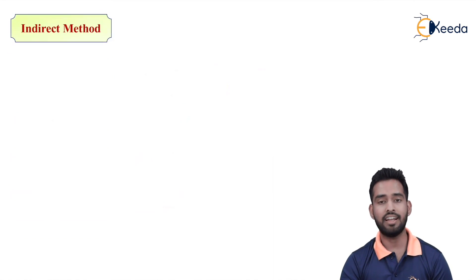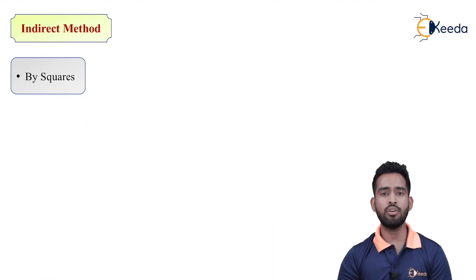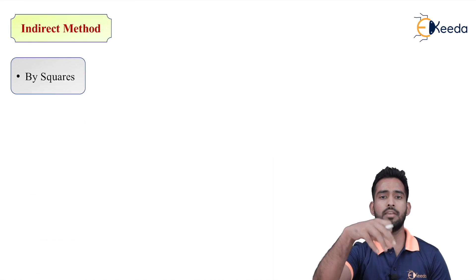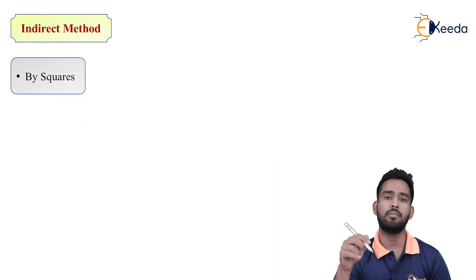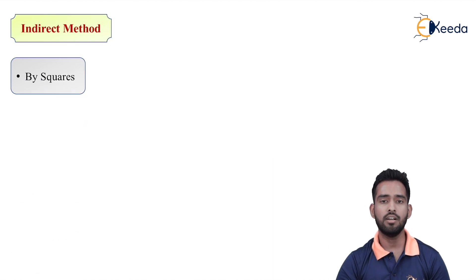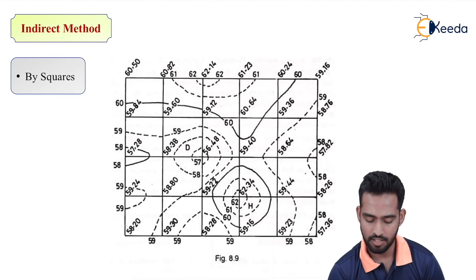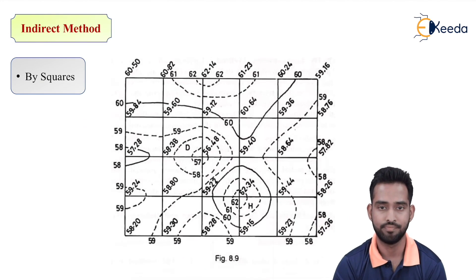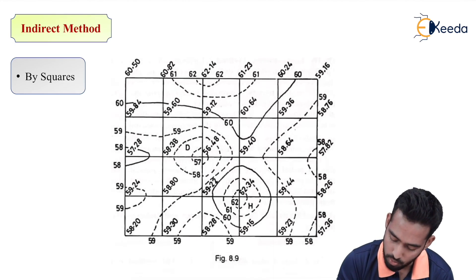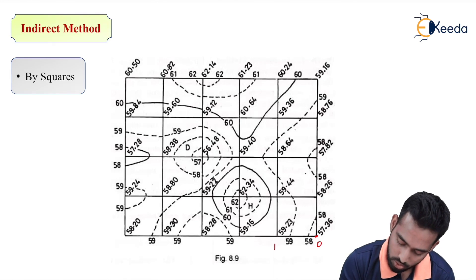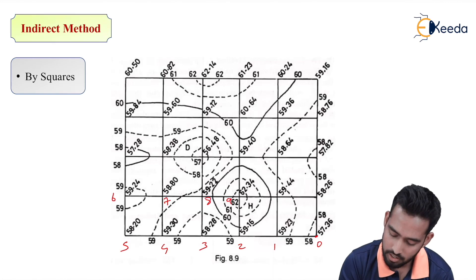Now the next method is the indirect method. In indirect method there are again two methods. The first method is by squares — as the name indicates, you have to divide the whole plot into equal-sized squares. For example, if the plot is 20 meters by 20 meters, we divide it into 5-meter by 5-meter squares. On each junction point we number them in a snake pattern: 0, 1, 2, 3, 4, 5, 6, 7, and so on.